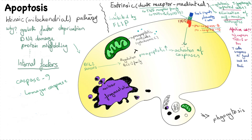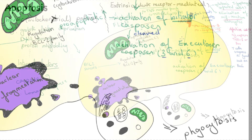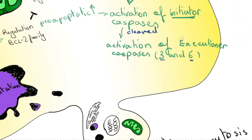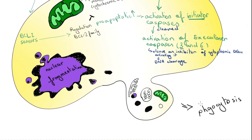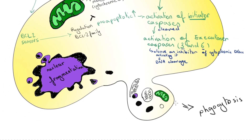In the execution phase, once an initiator caspase is cleaved to generate its active form, the enzymatic death program is set in motion, resulting in activation of executioner caspases such as caspase 3 and 6. These caspases work on several cell components — for instance, they cleave an inhibitor of cytoplasmic DNases, making the DNases enzymatically active and inducing cleavage of DNA.